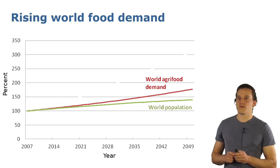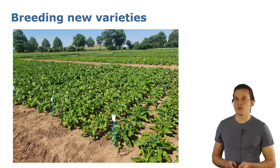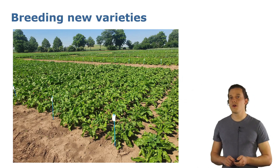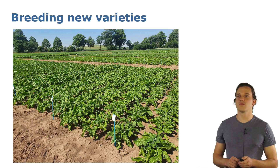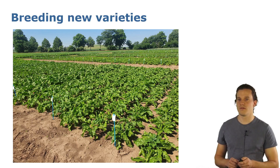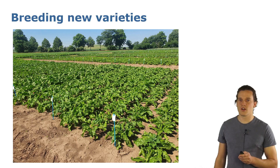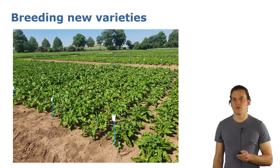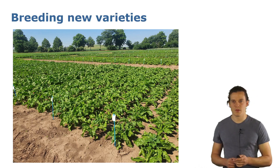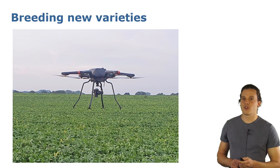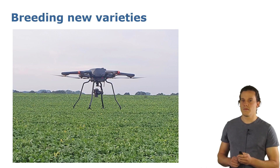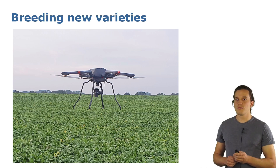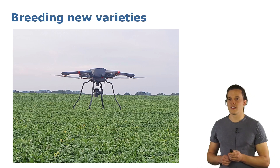One solution for these problems is the development of new varieties. This however involves a lot of repetitive human labor, especially to detect the traits of each plant in a process called phenotyping. Experts are commonly walking through the fields to collect the necessary data. Luckily, this can be automated by the use of UAVs to capture images from the air and autonomous evaluation techniques to extract the needed data.